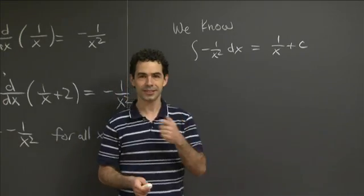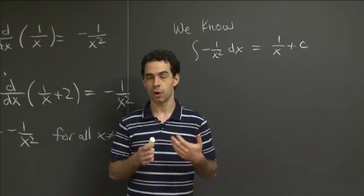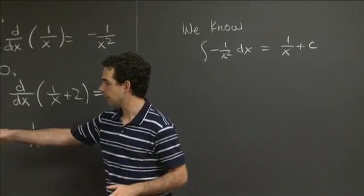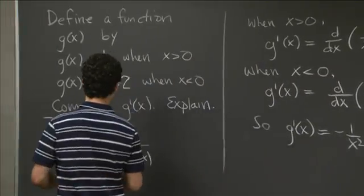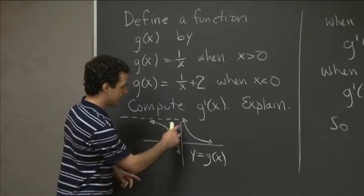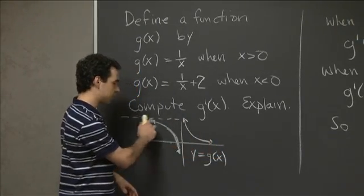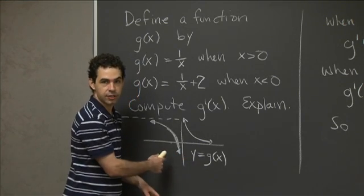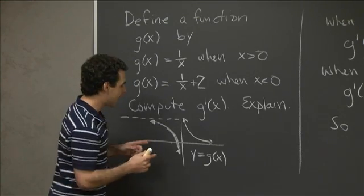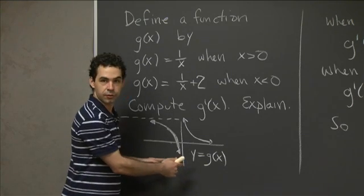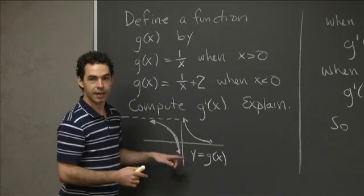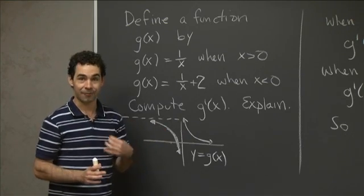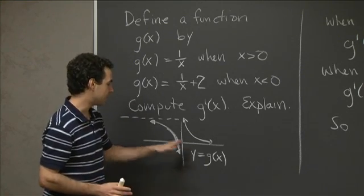The functions 1 over x and minus 1 over x squared are continuous and differentiable on certain intervals. The function g of x is continuous and differentiable for positive x and for negative x, but at 0 there's a discontinuity. There's no interval crossing 0 on which this function is continuous or differentiable. As a result, the mean value theorem can't tell us anything about intervals that cross 0 — meaning the conclusion doesn't have to be true. Our proof doesn't work when there's a discontinuity.